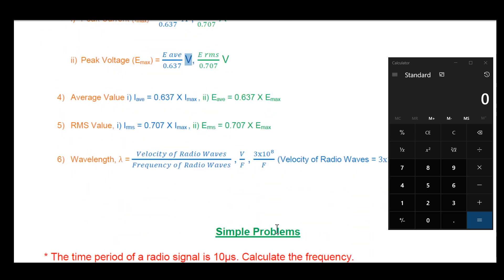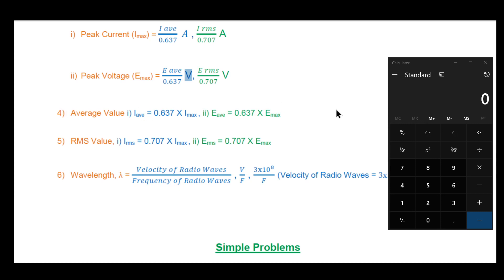Next is the average value. The average current equals 0.637 multiplied by Imax (peak current). Similarly, 0.637 multiplied by peak voltage gives the average voltage. For RMS value: the RMS current (IRMS) equals 0.707 multiplied by Imax.